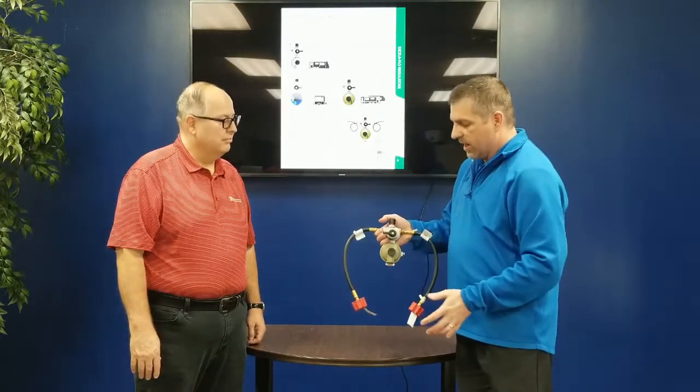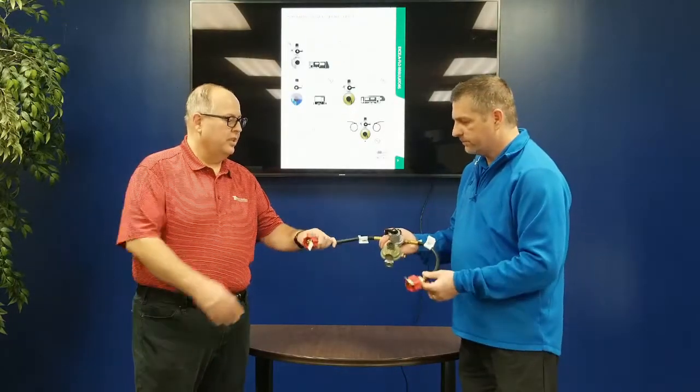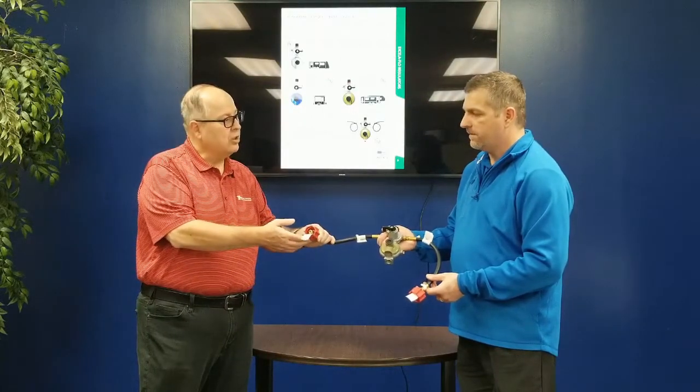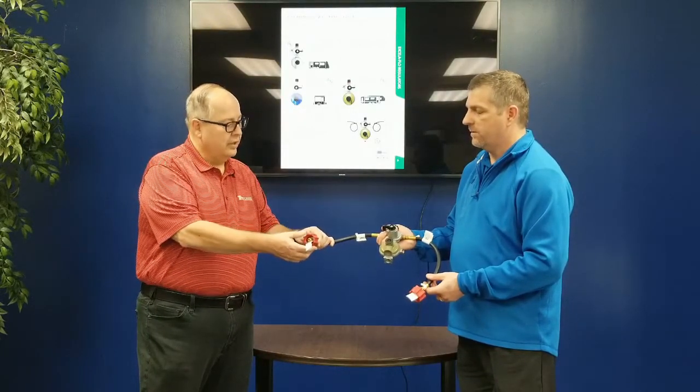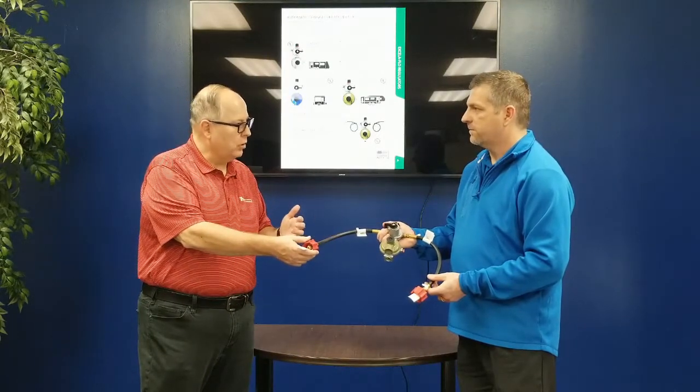So why the red connections? In these pigtails, the end here is called a QCC, quick connect coupler. They have what's called an excess flow check valve. It's a safety so that if this line ever became severed, it would shut the flow of gas off.